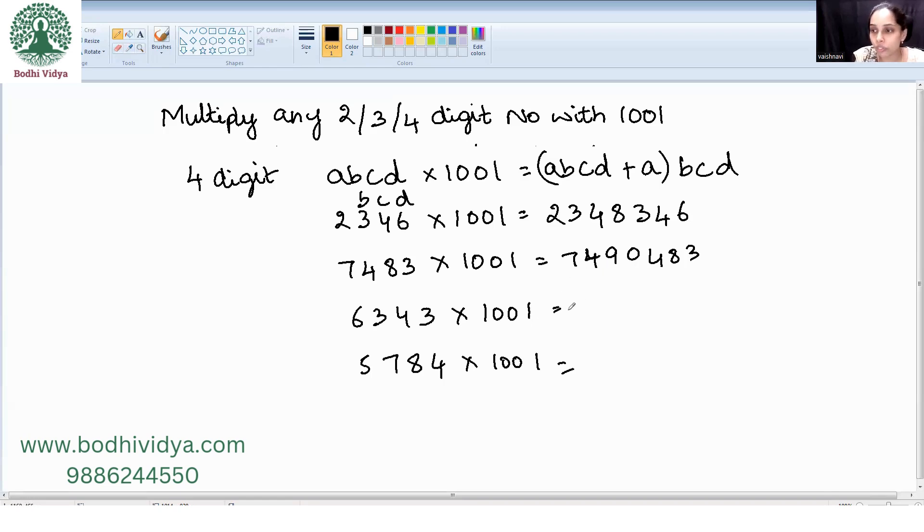Now 6343 into 1001. 6343 plus 6 is 6349, and the answer is 6349343.